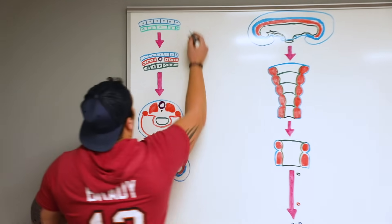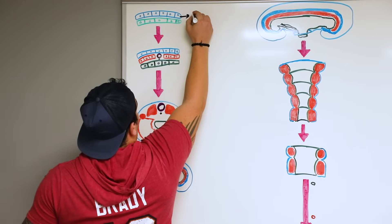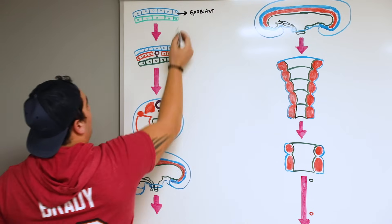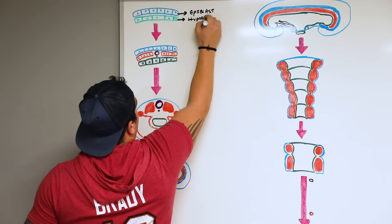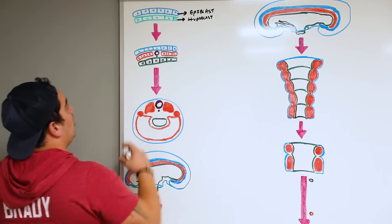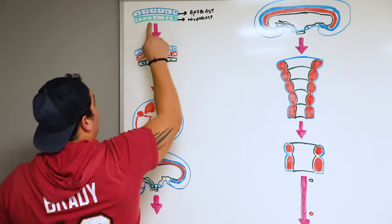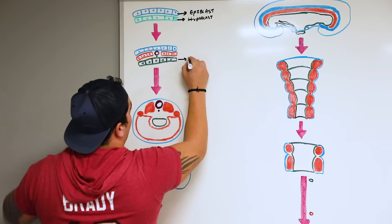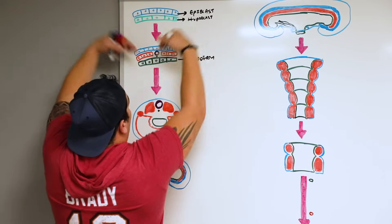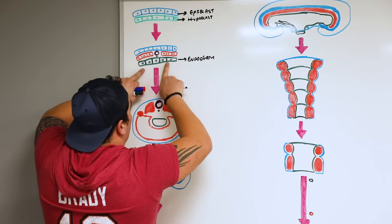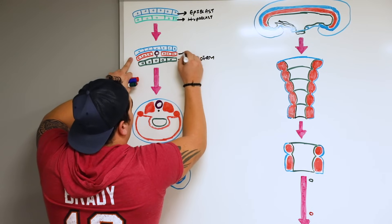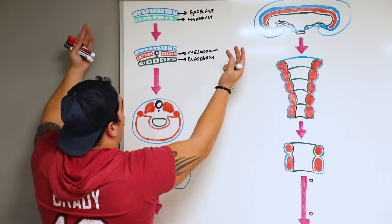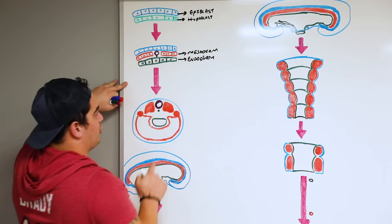Starting at the bilaminar disc around week two — we have our epiblast layer on top, the amniotic cavity above that, and the hypoblast layer below. Below the hypoblast is the yolk sac. What happens is you develop a primitive streak in the epiblast layer, and some epiblast cells move through the primitive streak and convert the hypoblast layer into the new endoderm layer. Then more epiblast cells move through the primitive streak, forming a new layer between the endoderm and the epiblast — that's called your mesoderm. We also have the notochord from epiblast cells moving through the primitive node. Then through neurulation you make the neural tube.